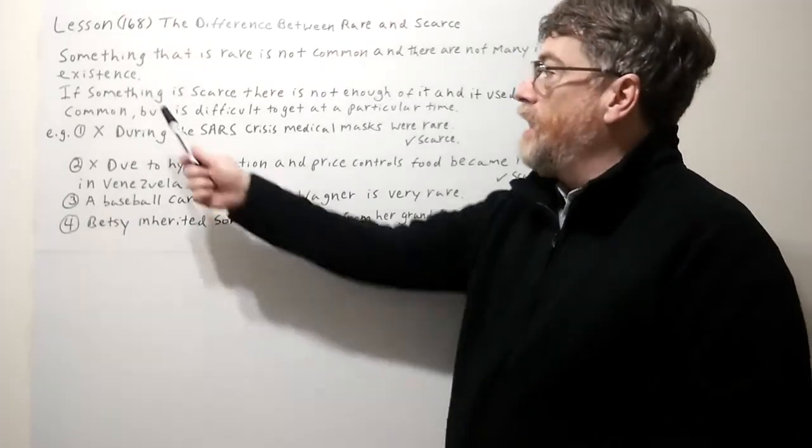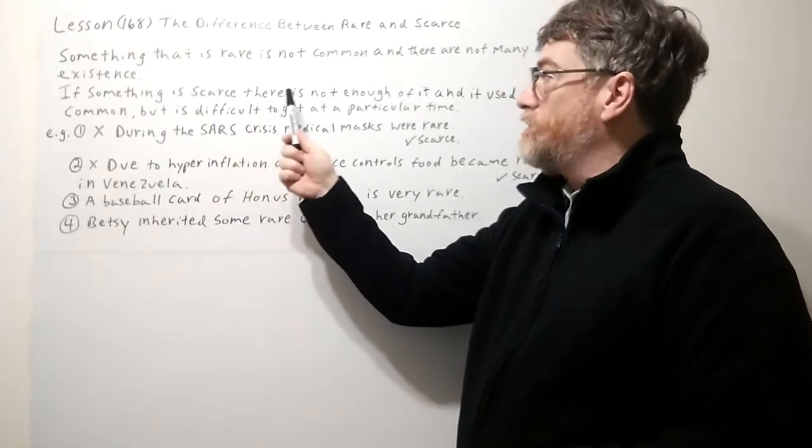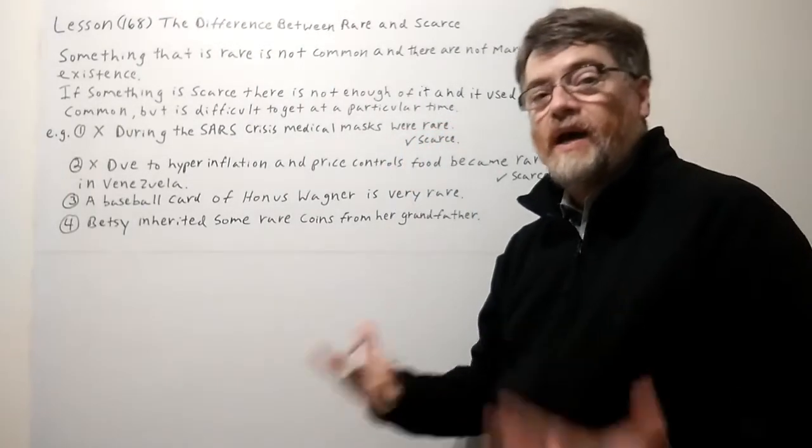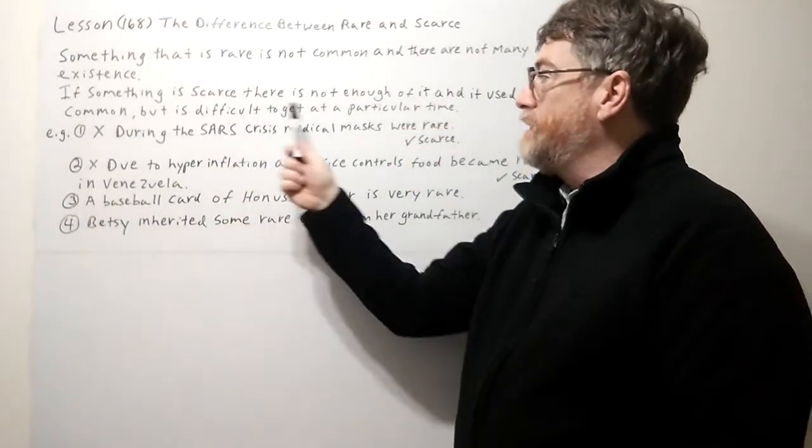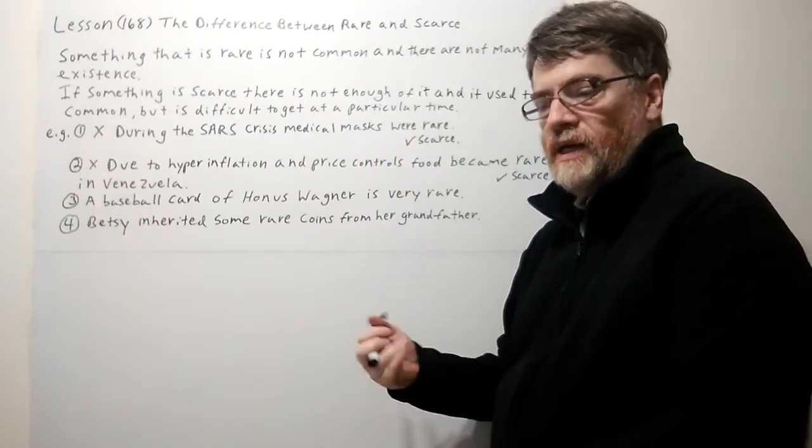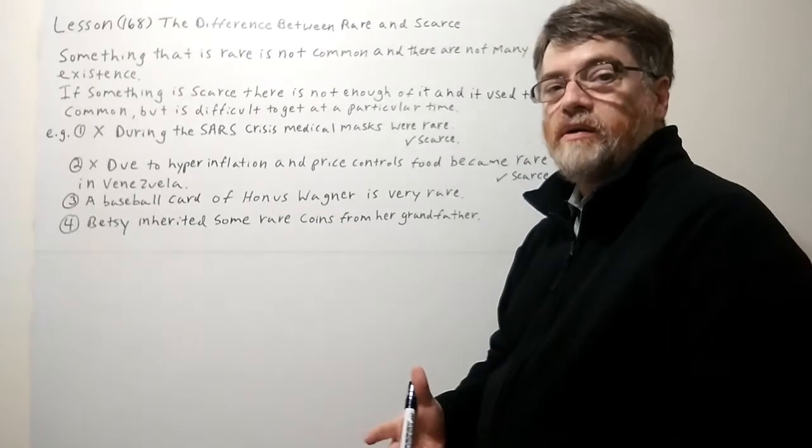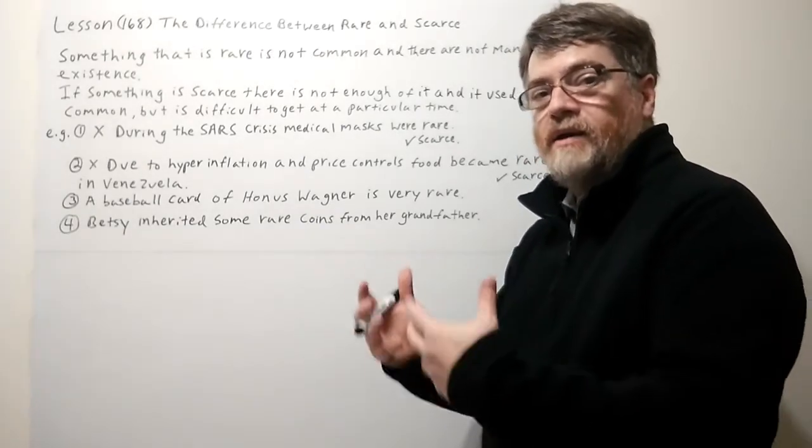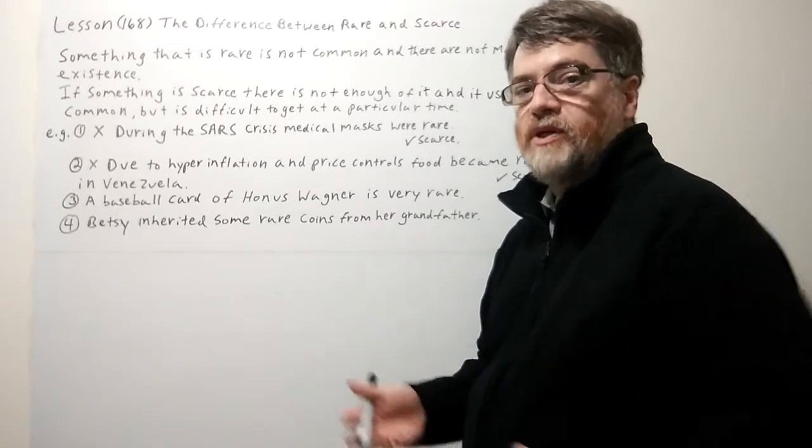All right, look at the second part. If something is scarce, there is not enough of it and it used to be common, but it is difficult to get at a particular time. So it might be more with the situation that a lot of them disappeared and that's why they're hard to find. That's why they're hard to get in a particular place at a particular time.